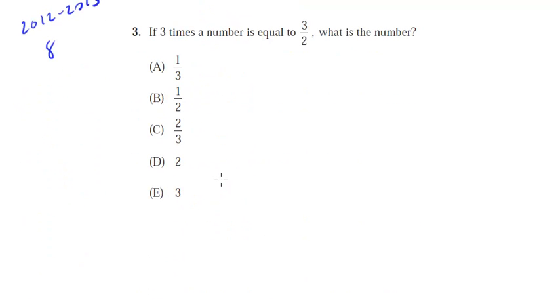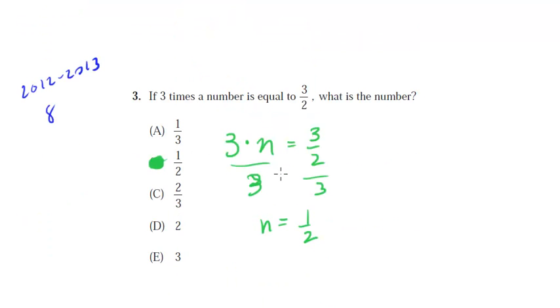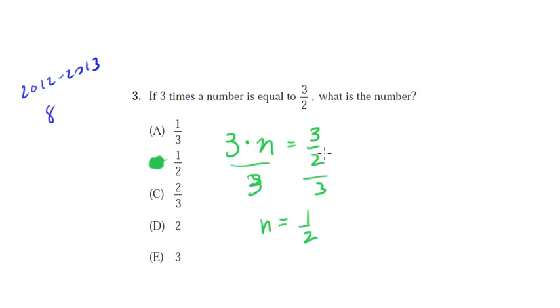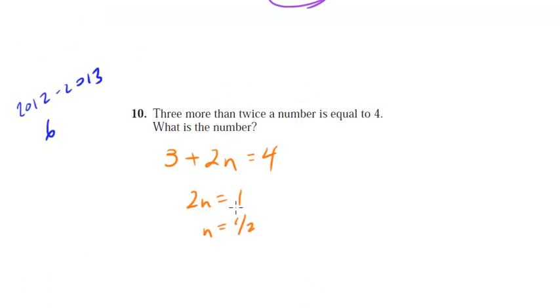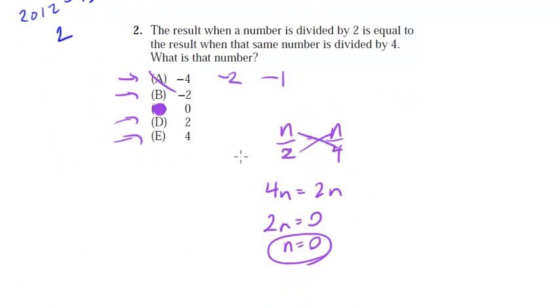Last question, if 3 times a number is equal to 3 halves, what is the number? So 3 times a number is equal to 3 halves. Divide both sides by 3. Be careful here. You can do this in your calculator, but this 3 is going to cancel out the 3 up here. So we're going to get 1 half. So the answer here is B. And remember, with all these algebra equations, you can always plug in your answer to check. We can plug in a half, and 3 times a half is indeed 3 halves. So you can just go back and plug your answer into the equation and make sure it all works out.